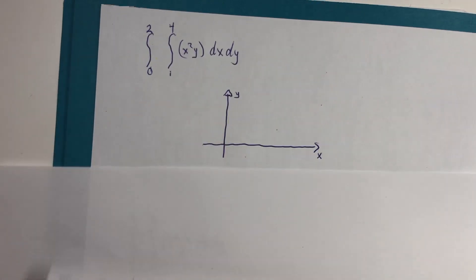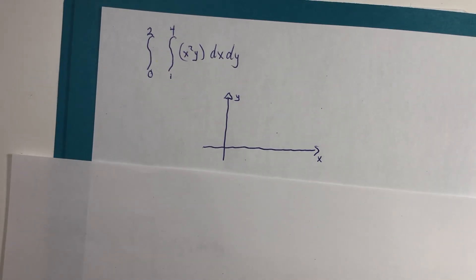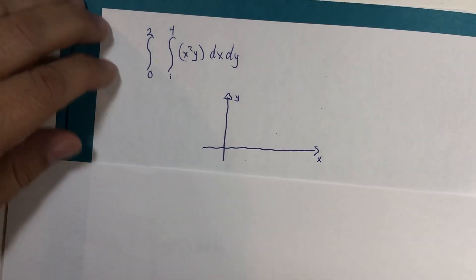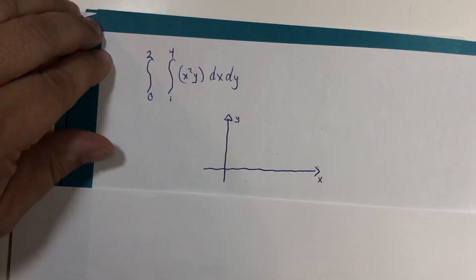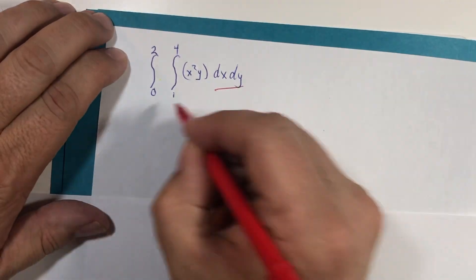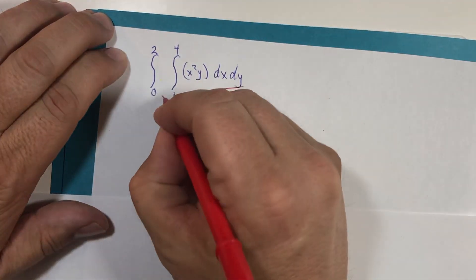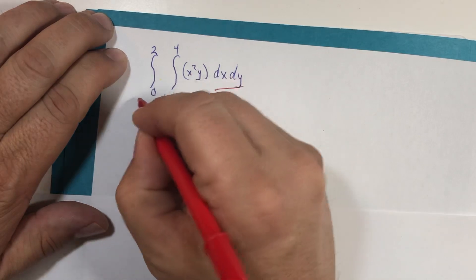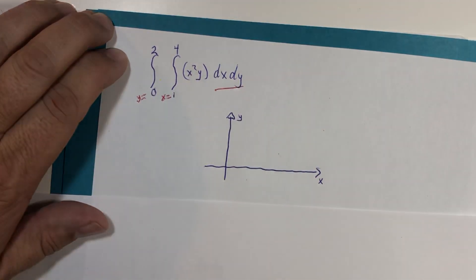The last video we had, we looked at this version. And we got a different answer. I think it was 42. This order switched, but not these boundaries. And so this is now saying x goes from 1 to 4 and y goes from 0 to 2, which is different from what we just discovered.